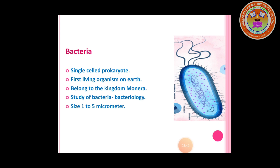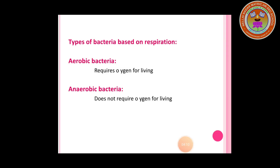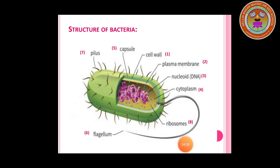Now we will discuss the second group: bacteria. Bacteria are single-celled prokaryotic organisms and were the first living organisms on Earth. They belong to the kingdom Monera. The study of bacteria is called bacteriology. The size of bacteria varies from 1 to 5 micrometers. Bacteria are classified into two categories based on oxygen requirement: aerobic bacteria, which require oxygen for survival, and anaerobic bacteria, which do not require oxygen.